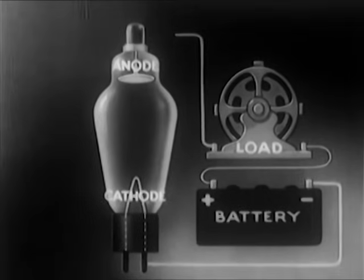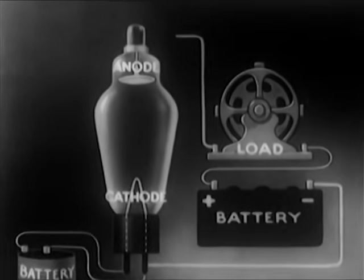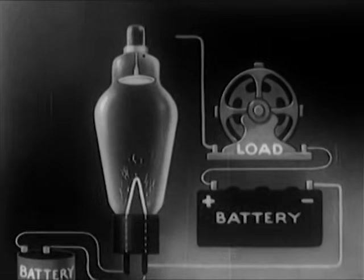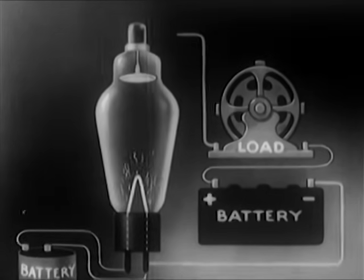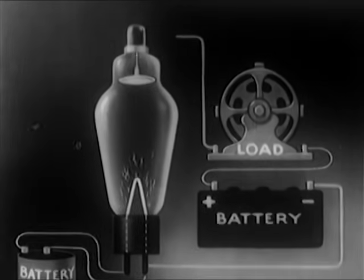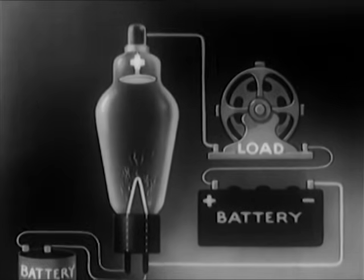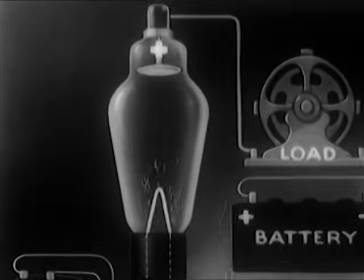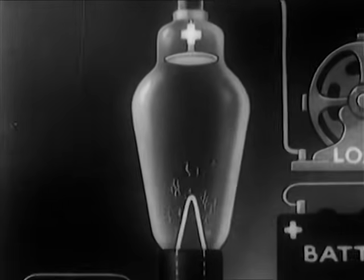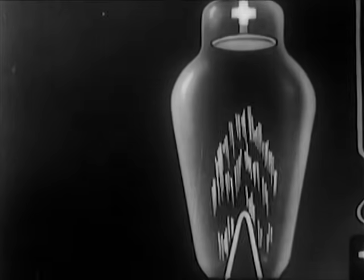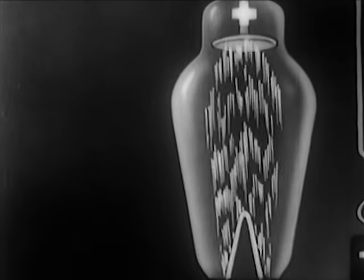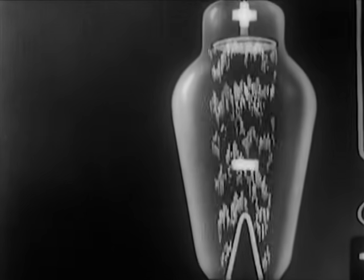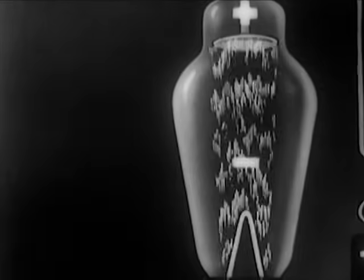To close this switch electronically, all we need do is heat the cathode and give the anode a positive potential. Then here's what happens: as electrons are emitted from the surface of the heated cathode, being negatively charged, they fly at tremendous speed to the anode.